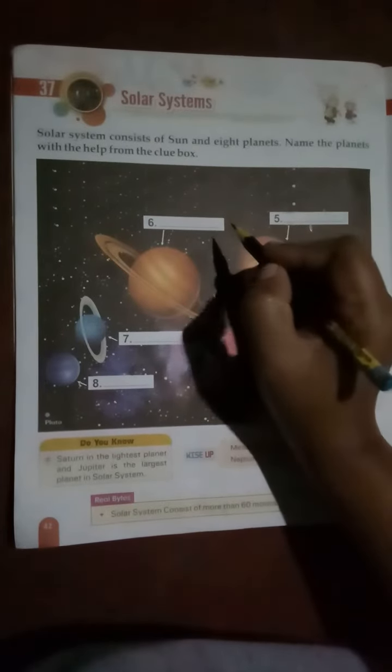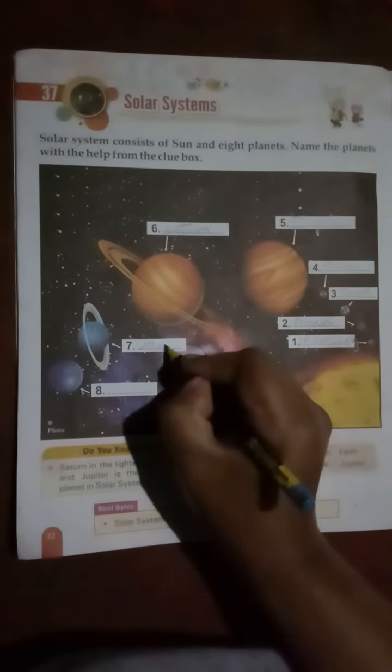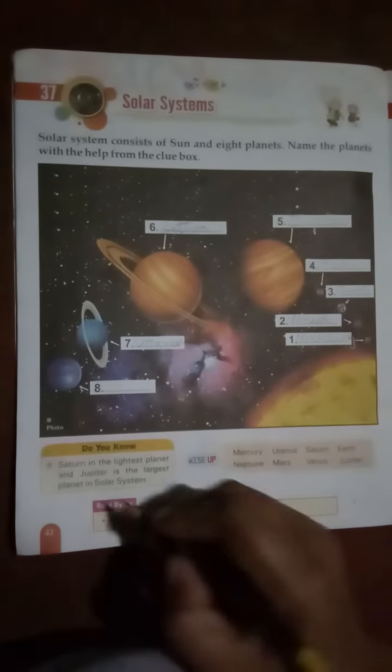Six: Saturn. Seven: Uranus. Eight: Neptune.